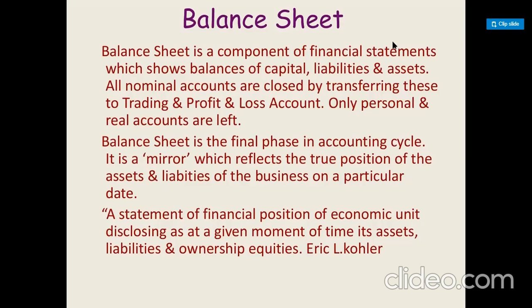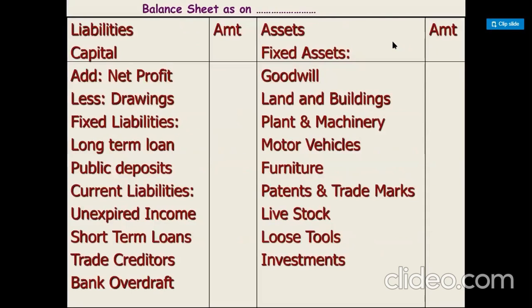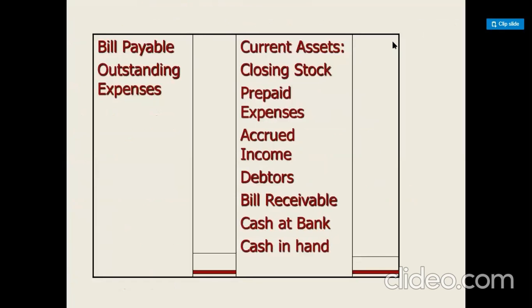The proforma for balance sheet has liabilities and capital on one side, and assets on the other. Under capital, net profit is added; if there is net loss, it is deducted; drawings are deducted. Then come fixed liabilities or long-term liabilities — for example, long-term loans, public deposits — and current liabilities, that is short-term liabilities, such as unexpired income, short-term loans, trade creditors, bank overdraft, bills payable, and other outstanding expenses.